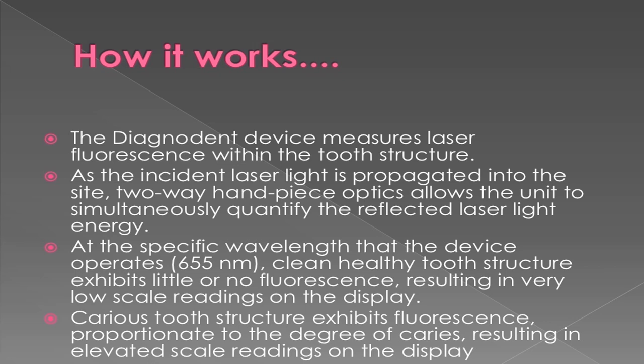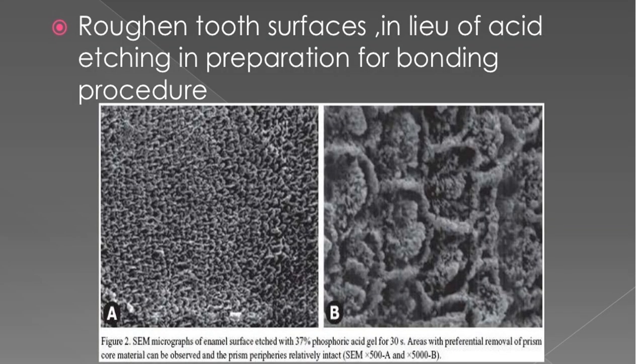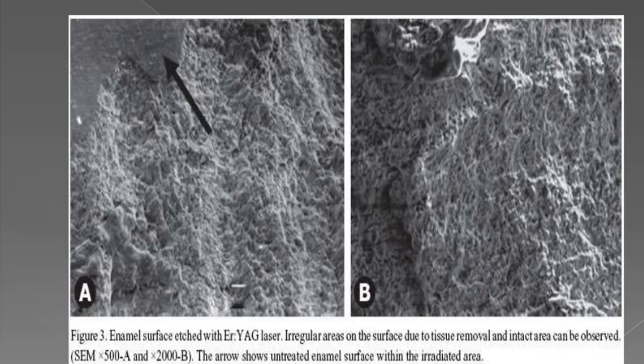Diagnodent is a pen-like probe that sends a safe, painless laser beam into the tooth. A numeric display and alarm signal when there are signs of hidden decay. The Diagnodent device measures laser fluorescence within the tooth structure. As the incident laser light is propagated into the site, two-way handpiece optics allow the unit to simultaneously quantify the reflected laser light energy at the specific wavelength at which the device operates — 655 nm. Clean healthy tooth structure exhibits little or no fluorescence, resulting in very low scale readings. Carious tooth structure exhibits fluorescence proportionate to the degree of caries, resulting in elevated scale readings.